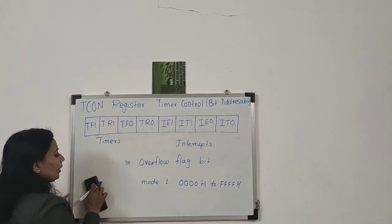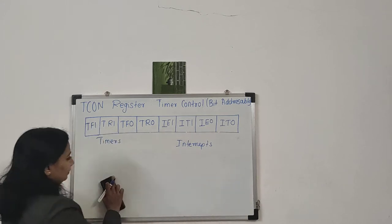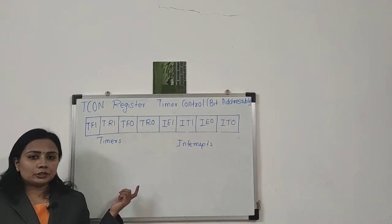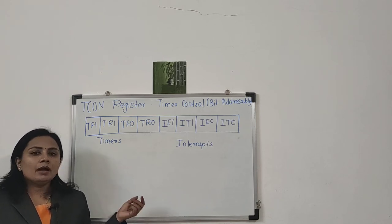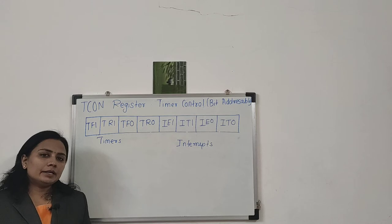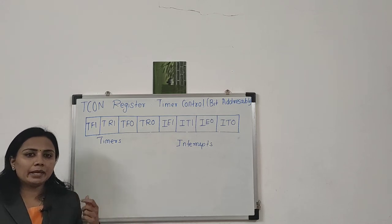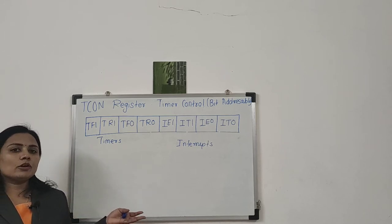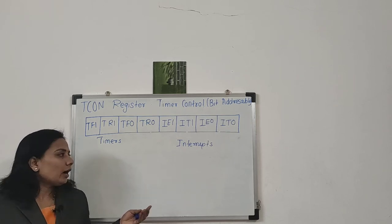In programming, we have to clear this flag bit. The set action of this timer flag bit is done by hardware, but while doing programming we have to clear this flag bit for the next iteration. In the case of an interrupt, it is automatically cleared by hardware.